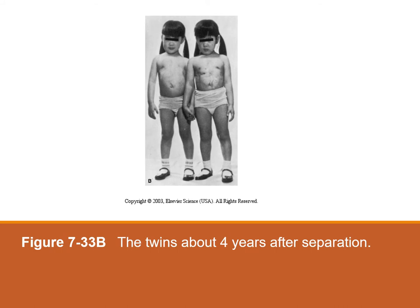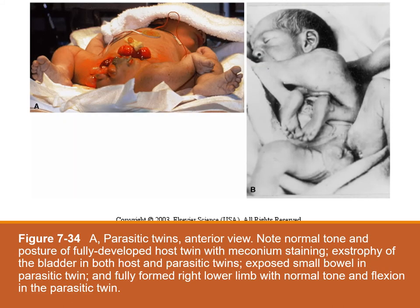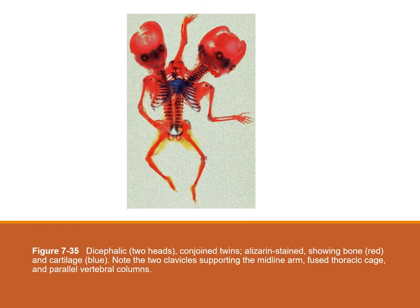This photograph shows twins four years after they were successfully separated. Another interesting photo shows parasitic twins, where one twin is larger and the smaller twin usually does not have complete body parts. There is also a figure showing dicephalic, or two-headed, conjoined twins with bones shown in red and cartilages in blue. Note that two clavicles support the middle arm, and there is a fused thoracic cage and parallel vertebral columns — they share many structures together.